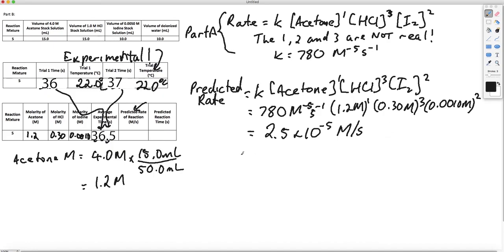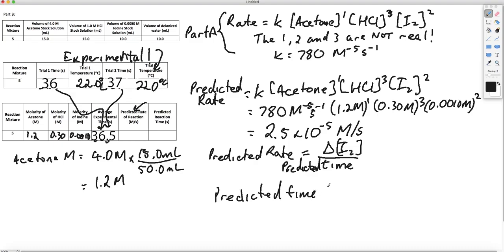That's the predicted rate. Now we've got this other time we're going to come up with. The predicted rate is linked to the disappearance of the iodine. It's the change in concentration of iodine over the time. But the key is the predicted time. Predicted time is the concentration of I2 divided by the predicted rate. That's just from rearranging that equation.